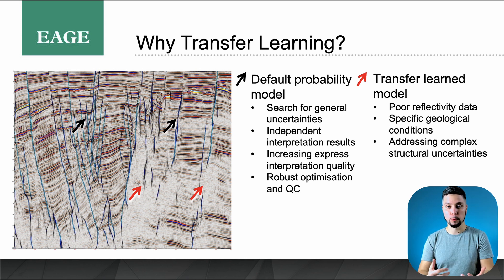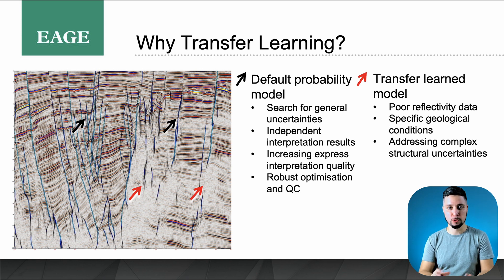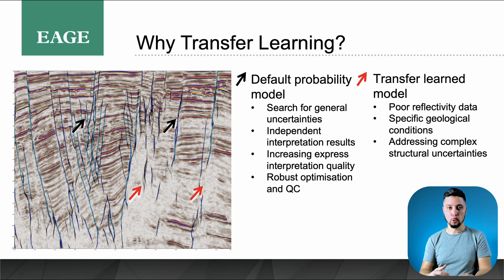Transfer learning is a term from data science that means taking a well-performing neural network trained on one dataset and adapting it to a desired dataset, usually by supplying labeled examples. In geophysics for fault delineation, that means supplying tens of interpreted slices. Our work is dedicated to easing the process of transfer learning — instead of providing tens of slices, we provide just one slice for the transfer learning process.